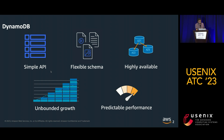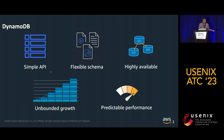A quick primer: DynamoDB, like many NoSQL databases, offers a simple API. Typically, you store data in a key-value format where a key could point to a JSON object, and all the complexity of replicating data is abstracted behind simple APIs like put and get. There is no fixed schema — you can have a table storing product images, graphs, order information, and customer information.